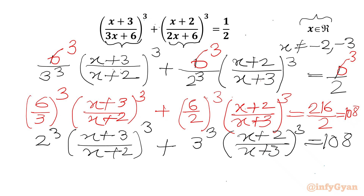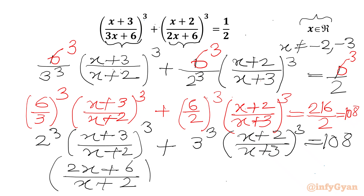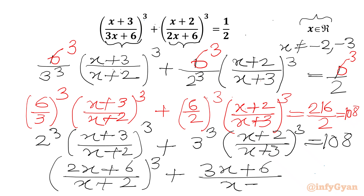Now I will take 2 cubed into the bracket, so I will write 2x plus 6 over x plus 2 whole cube. And taking 3 cubed into the bracket gives 3 times x is 3x, and 3 times 2 is 6, so 3x plus 6 over x plus 3 whole cube equal to 108.